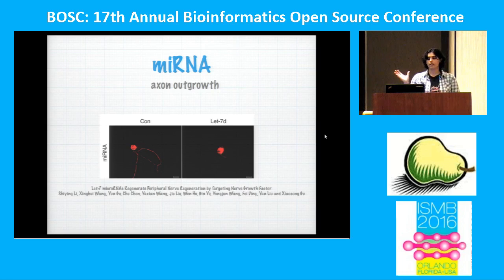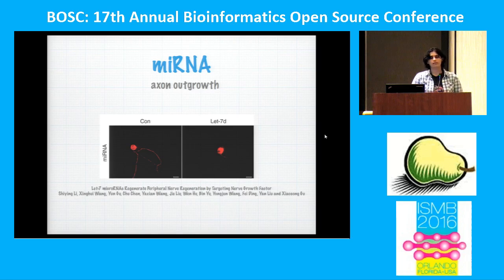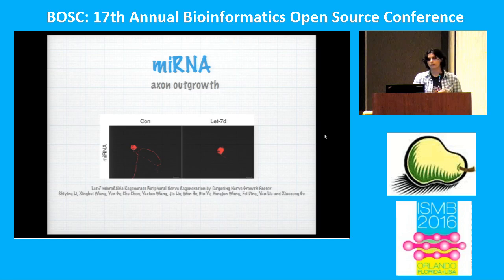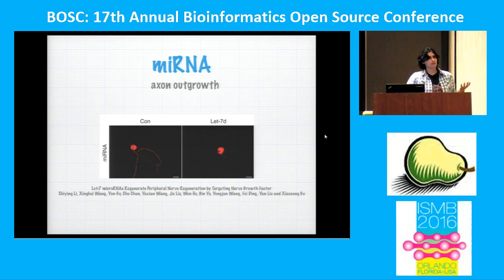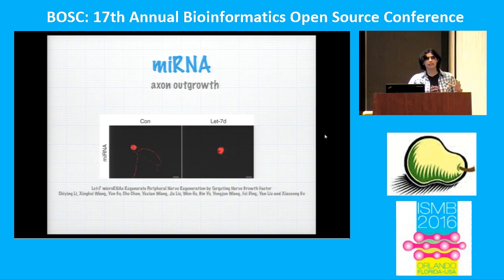For instance, in a specific neuron cell type, when you don't have let-7 — which is one of the microRNAs involved in neural regeneration — you have axon outgrowth. But when you put let-7 in, it will stop that growth because it targets an important gene involved in that process. So they have pretty important and cool functions.